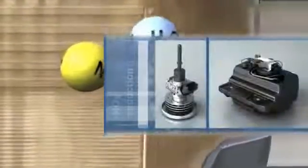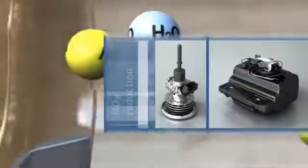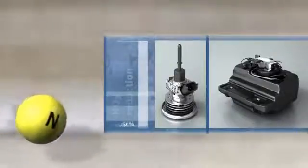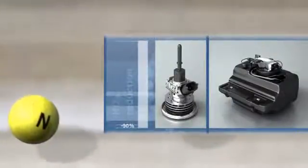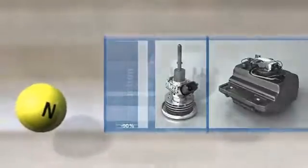The Bosch metering system Denoxtronic PCLD, in conjunction with an SCR Catalytic Converter, reduces the remaining portion by over 90%. This reduction is required to meet statutory emissions limits, and by reducing pollutant emissions, also contributes to environmental protection.